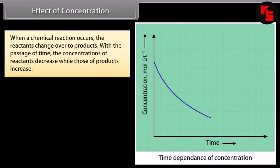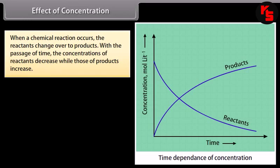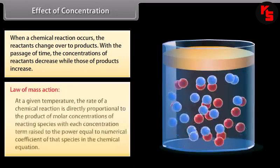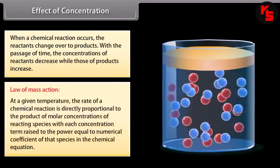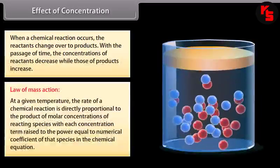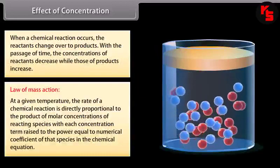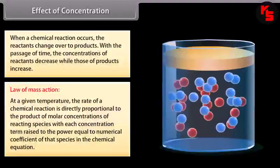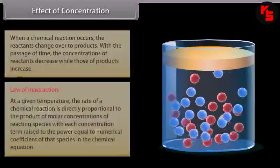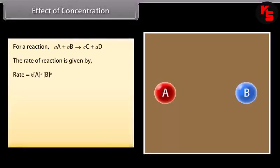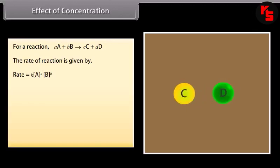When a chemical reaction occurs, the reactants change over to products. With the passage of time, the concentrations of reactants decrease while those of products increase. Law of mass action: at a given temperature, the rate of a chemical reaction is directly proportional to the product of molar concentrations of reacting species, with each concentration term raised to the power equal to the numerical coefficient of that species in the chemical equation.